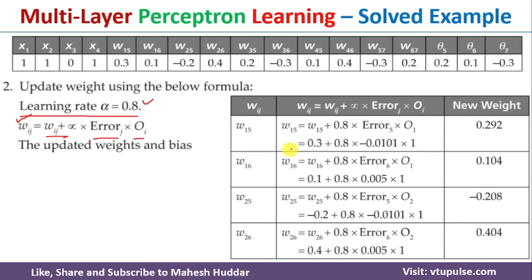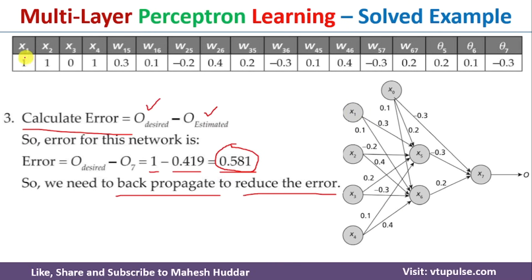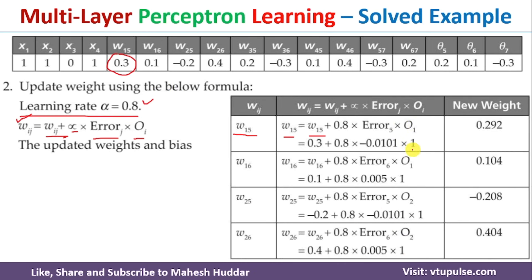I will show you a few calculations; the remaining ones you can do by yourself. For W15, the update is: W15(new) = W15(old) + 0.8 × error5 × O1. The old weight W15 is 0.3, the learning rate is 0.8, error5 was calculated previously, and O1 (the output at neuron x1) equals 1 — which is simply the input. Solving this gives the new weight.